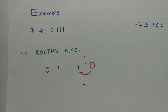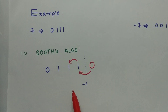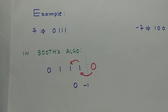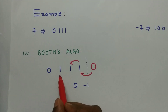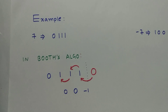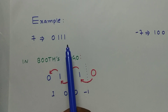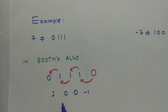Next, moving from 1 to 1 gives 0. Again 1 to 1 is 0. Then moving from 1 to 0 gives 1. So the binary value of 7 (0111) is represented as 1, 0, 0, -1 in Booth's algorithm form.